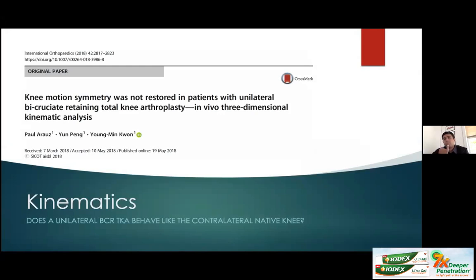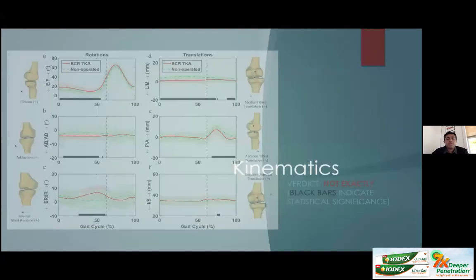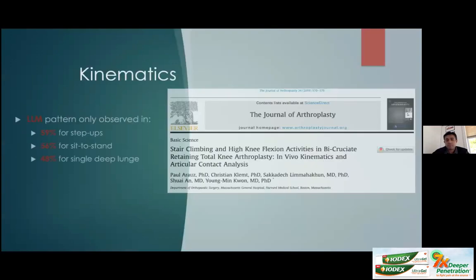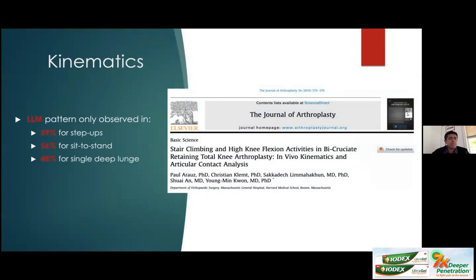The critical question: does a unilateral bicruciate retaining knee behave like the contralateral native knee? The verdict is that with various degrees of rotation and translation, large differences persist between bicruciate retaining and native knees in almost all measures except superior femoral translation. The early lateral late medial dual pivot pattern is only visible in about 50–60% of patients with bicruciate retaining TKA — not in all patients. There remains a significant limitation to this design that is not yet fully understood.